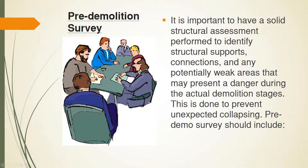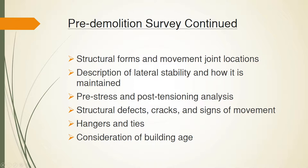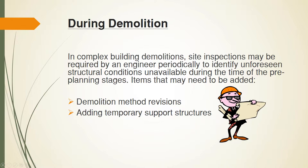The engineer's responsibility is to assure a controlled collapse is achieved. Pre-demolition surveys consist of structural forms and movement joint locations, description of lateral stability and how it is maintained, pre-stress and post-tensioning analysis, structural defects, cracks, signs of movement, hangers, ties, and the age of the building. Once demolition begins, site inspections may be required by an engineer periodically in complex building demolitions to identify unforeseen structural conditions unavailable during the time of the pre-planning stages.